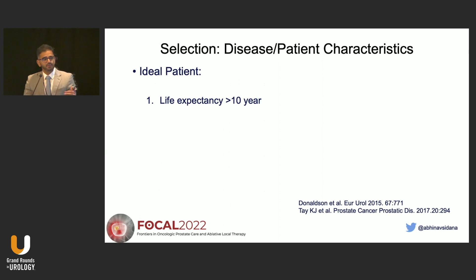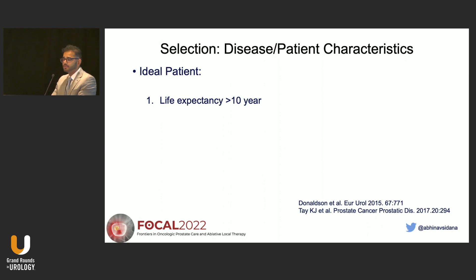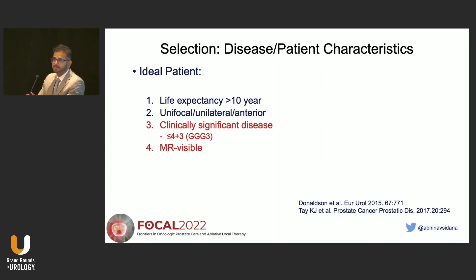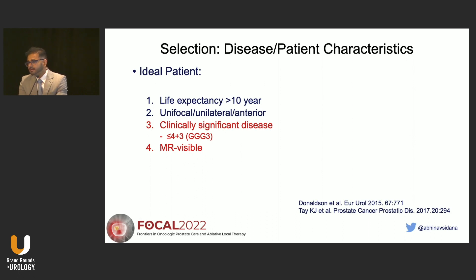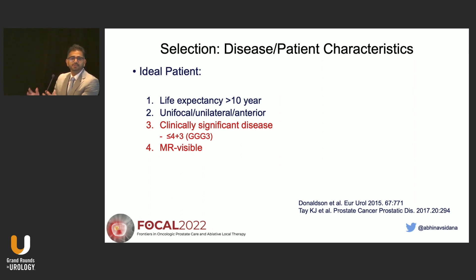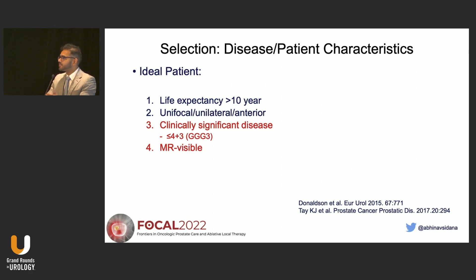The ideal patient — which I believe is consensus from the experts and what I use in my practice, especially when starting a focal program — is someone with a life expectancy greater than 10 years. The easiest cases are patients with unifocal, unilateral, or anterior disease. By choosing these locations, you can avoid damage to at least one neurovascular bundle, prevent sphincter damage, and preserve genitourinary function, which is essential for focal therapy.